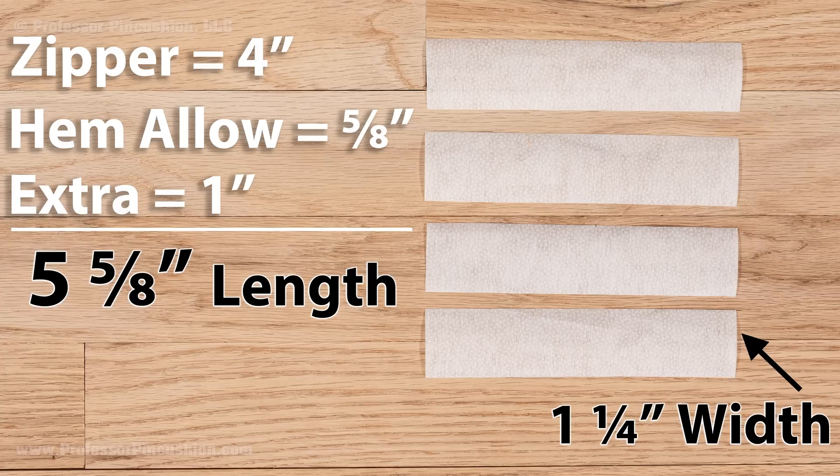Apply the fusible interfacing on the edge of each seam where the zipper will be attached to. So you'll be applying interfacing twice to each sleeve set. Place the tab of the zipper at the marked hemline and mark on the interfacing where the end of the zipper will be. Do this for each section with interfacing.